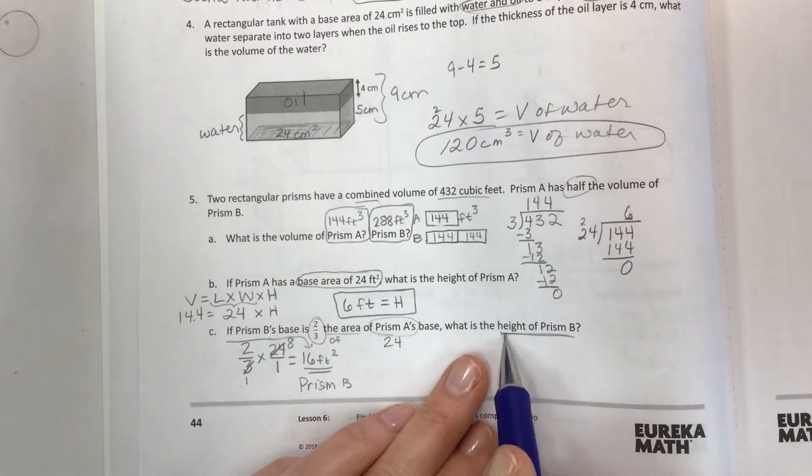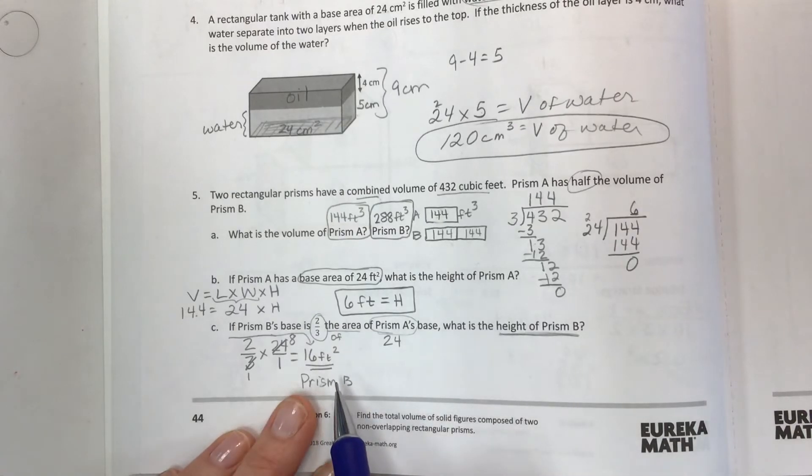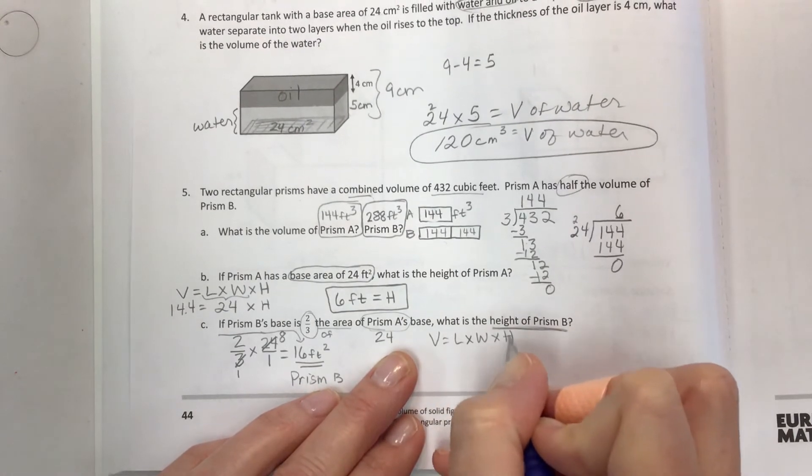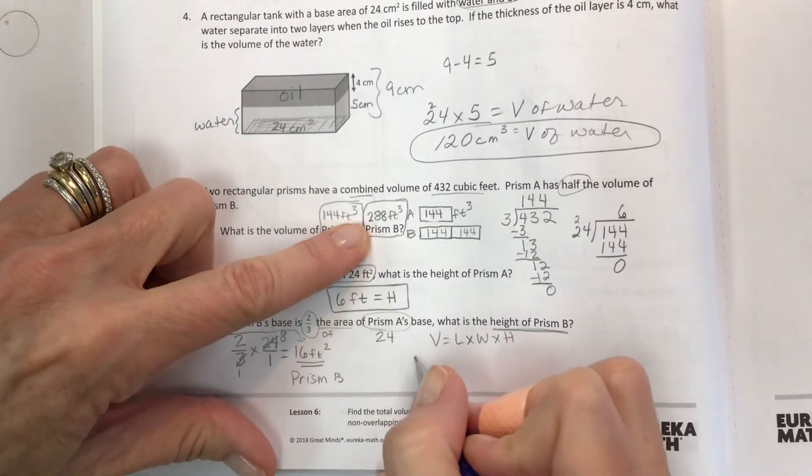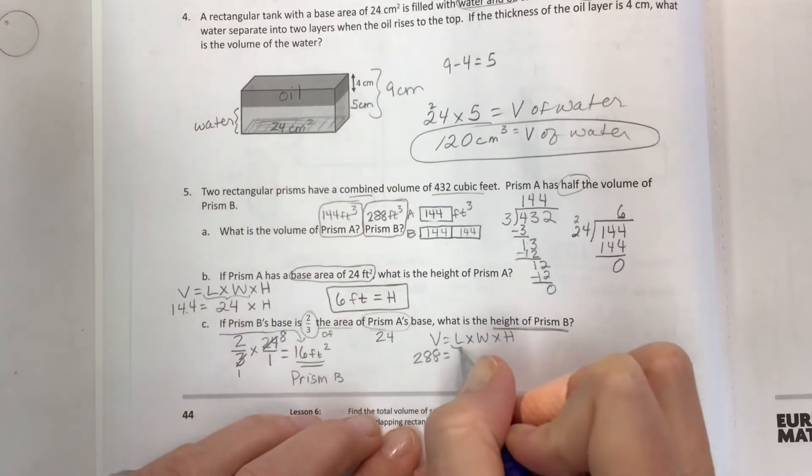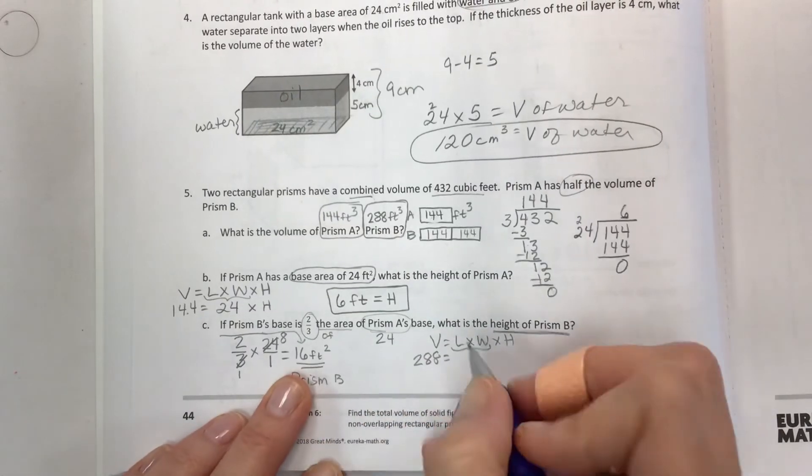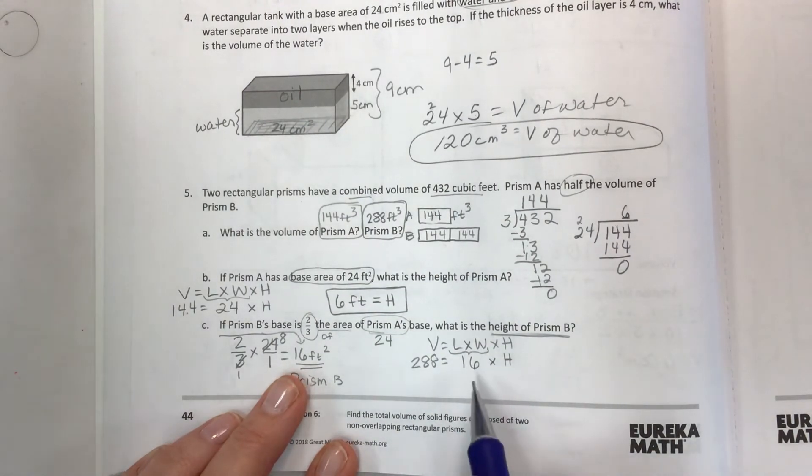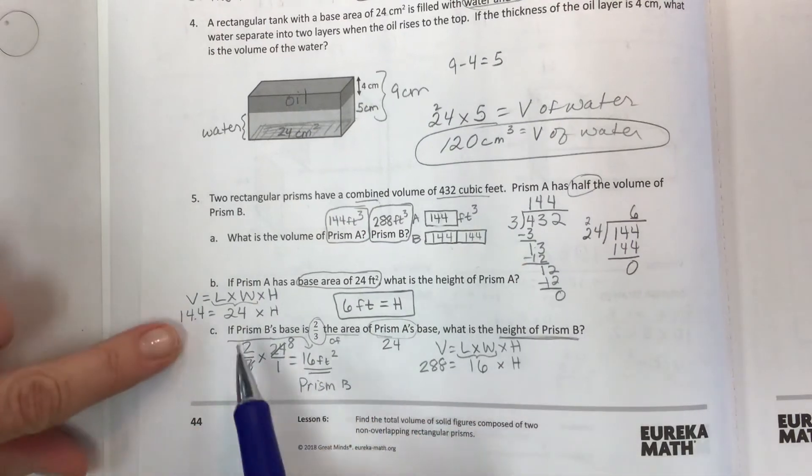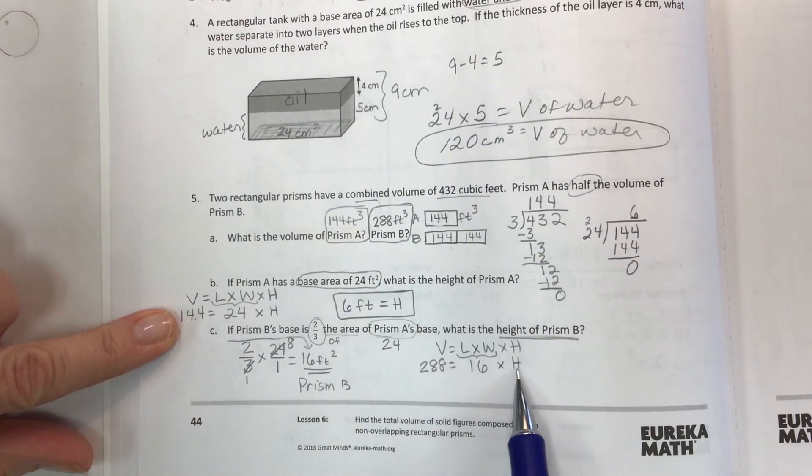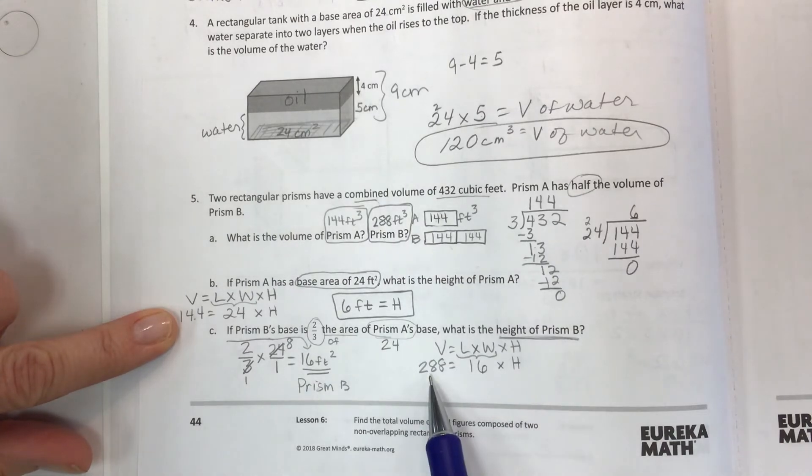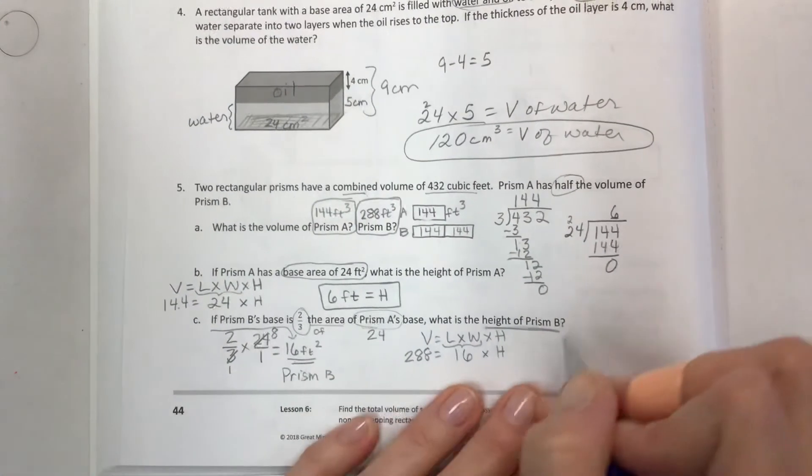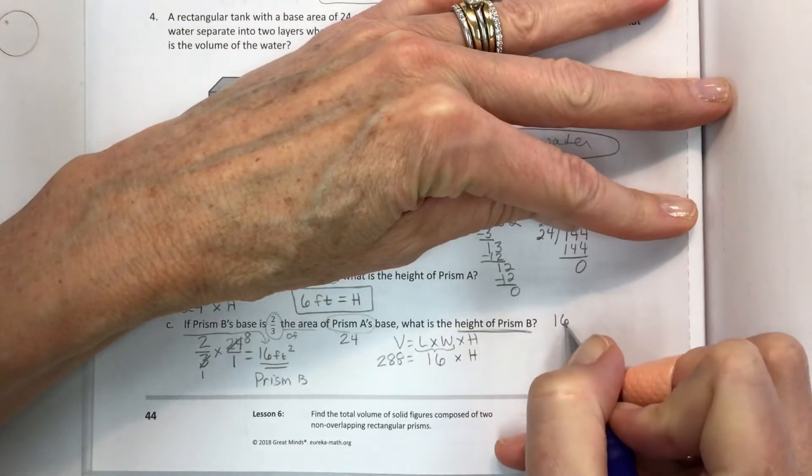What is the height of prism B? Well if this is the base area we have to go to the volume because volume equals length times width times height. We know the volume of prism B, it's 288. We know the length times width because that's the base area, we only don't know the height. Last part now, just like this one up here, if you have a missing factor, 16 times what is 288. Same approach that we did here, I could just divide both sides by 16 to find out the missing number.